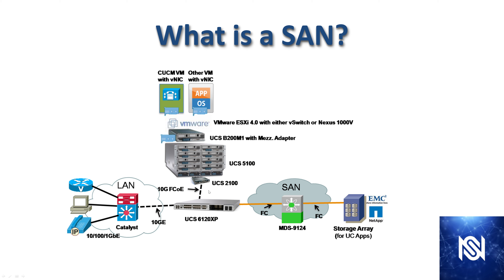To relate this to the any-to-any communication we discussed, an application residing on the B series can access multiple storage arrays. In this picture we only have one storage array, but there could be different types of storage, and the same application could use different storage arrays without being locked into just one. End users on the LAN or desktop applications can also come through the fabric interconnect and access storage in the SAN directly.